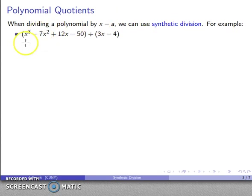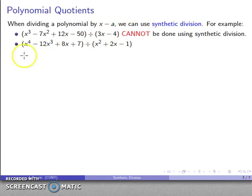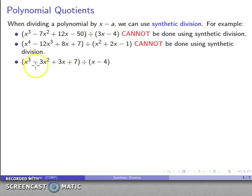For example, let's say I want to do this division. My divisor is not x minus a, so I can't use synthetic division. Or if I have something like this, again my divisor is not x minus a, so I can't use synthetic division. Finally, let's say this quotient—my divisor is x minus a, so this is something where I can use synthetic division.